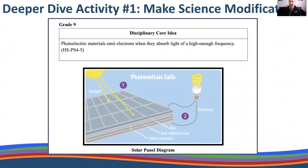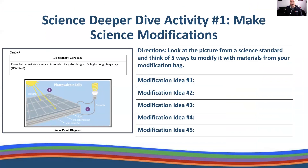For your deeper dive activity, I encourage you to make a science modification. This is grade nine. As the grades get higher, the content gets more abstract, and so it gets harder to modify. I want you to think about how to make even really complex and abstract ideas tangible and accessible for students with disabilities. The disciplinary core idea for grade nine is: photoelectric materials emit electrons when they absorb light of a high enough frequency. The image shows sunlight hitting solar panels — photovoltaic cells — which push energy through a glass anti-reflective coat and semiconductor to convert it into electricity and light a light bulb. This is a solar panel diagram.